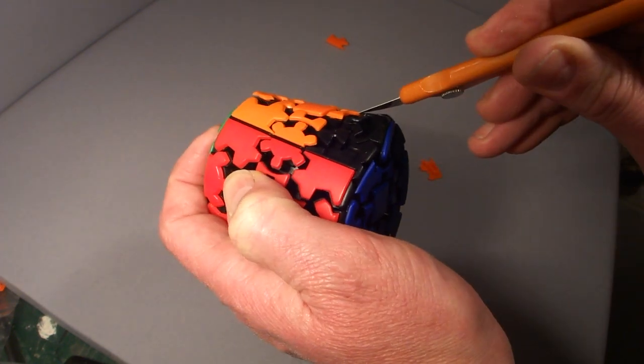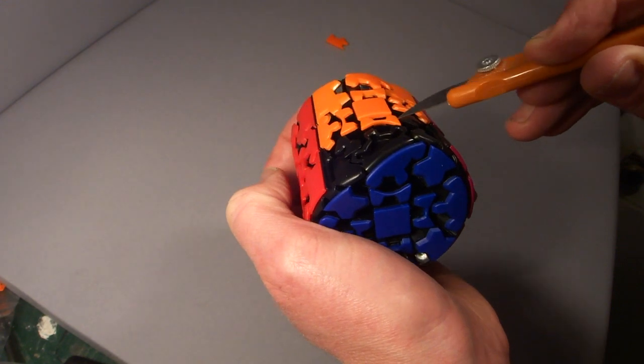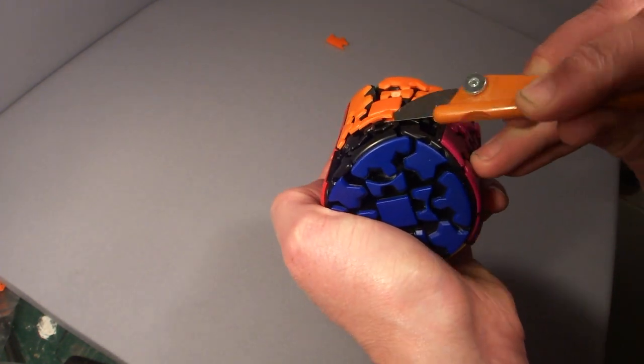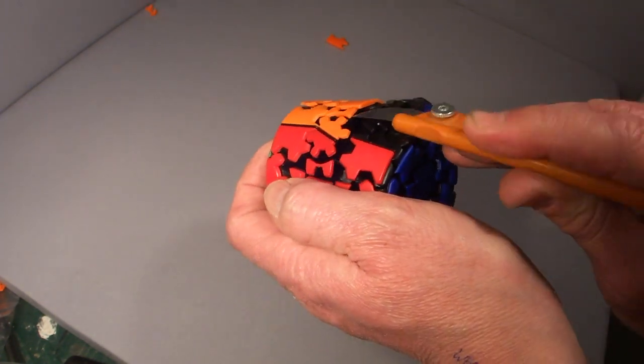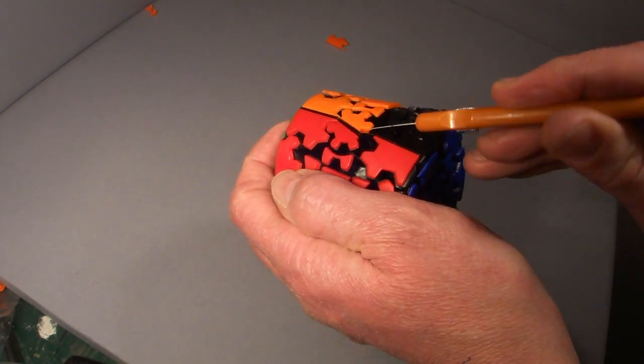Some people have asked if it is possible to remove the tiles. It is, but large holes are left which you would need to fill with something like Milliput or Epoxy Sculpt before you could put stickers in their place.